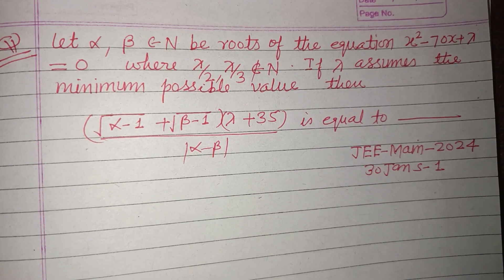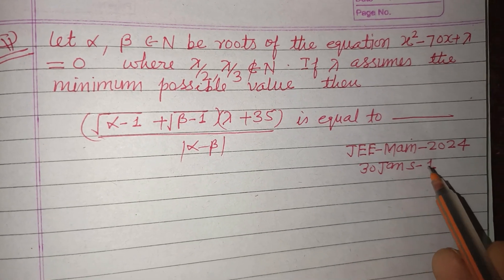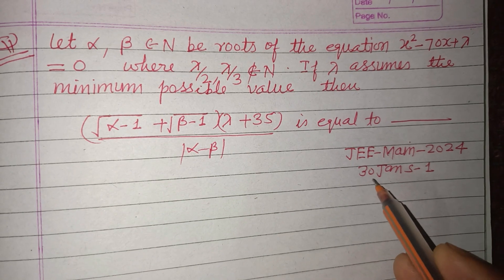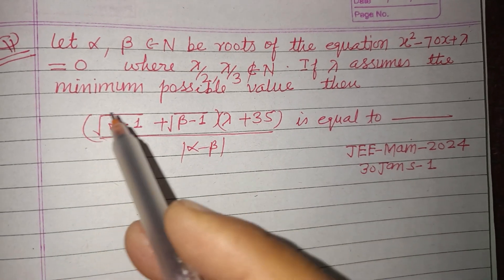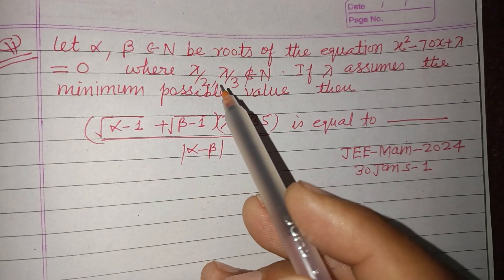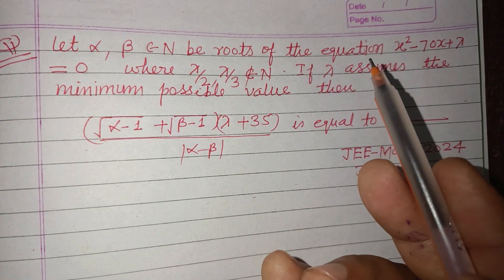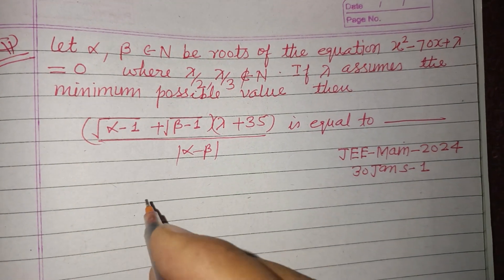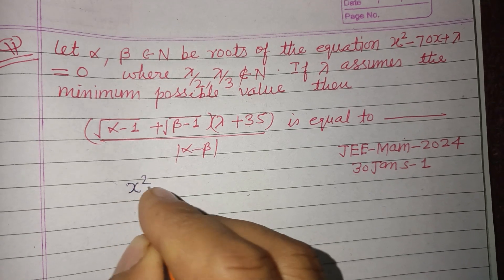Hello viewers, warm welcome to this YouTube channel. This is a question from JEE Main 2024, 30th January shift first. Let alpha, beta belong to natural numbers be roots of the quadratic equation x² - 70x + λ = 0.